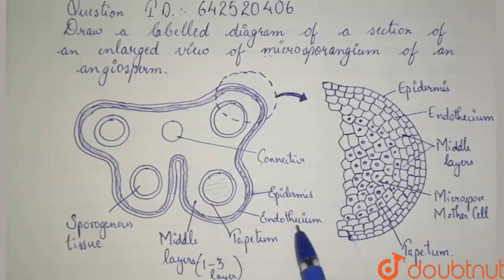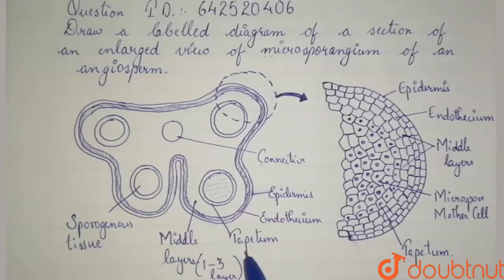The epidermis, the endothecium and the tapetum are single layered, while the middle layer, which is present between the endothecium and the tapetum, is one to three layers.